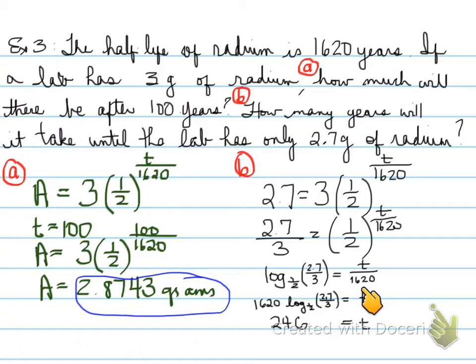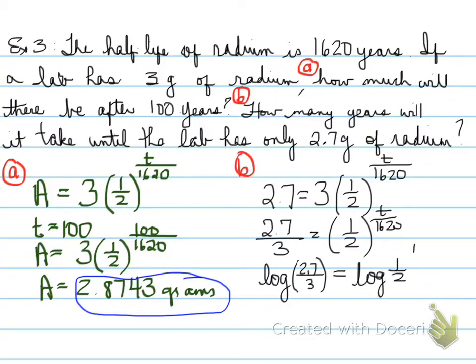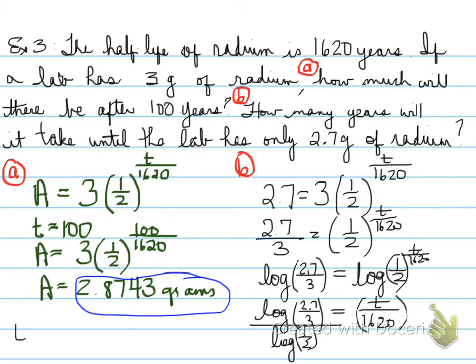But how else could you have done this question and still gotten the right answer? Well folks, that would mean you would have to take the log of both sides, and then bring the exponent in front, and divide by log of 1/2. When you divide by log of 1/2, you'll end up with a value of 246 years. So the exact same answer we got in the last question, I just did a different way, and you get the same answer. So either way, I guarantee you'll get the same answer, and you'll get the full marks.